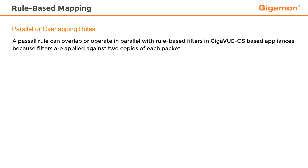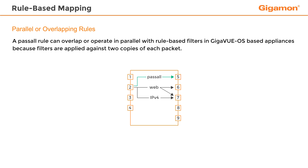Unlike a normal business class switch, which supports ACL filters that forward or drop according to the first match, GigaView OS-based appliances have two copies of the packet available for filtering. Therefore, a pass-all rule can overlap or operate in parallel with rule-based filters in GigaView OS-based appliances. Consider the displayed graphic. Here, traffic from network ingress port 2 is being filtered by rule-based mappings and is also being filtered by a pass-all mapping.